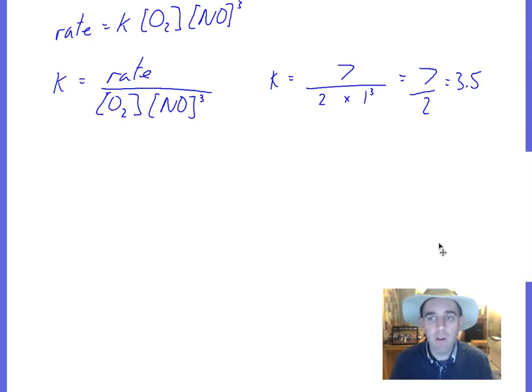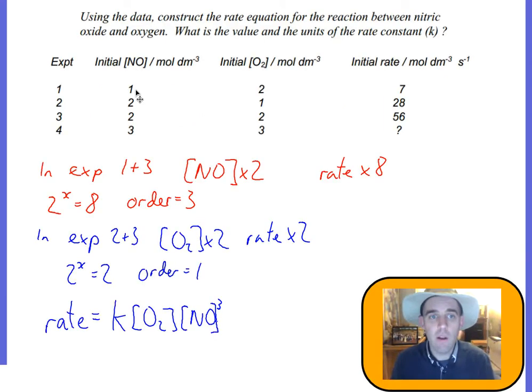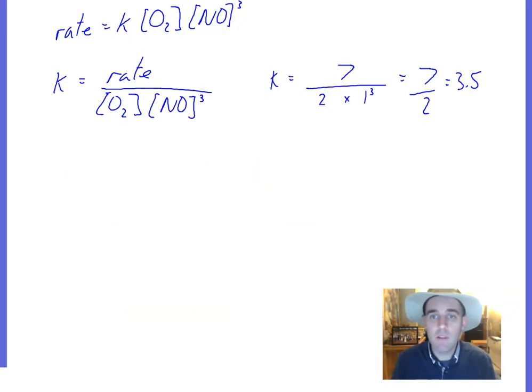If I want to find k, I rearrange the equation. You can see here, take the rate equation, rearrange it to find k. I've divided by O2 and divided by NO to the power of 3. It gives me that. These figures here I've just taken from the first line. It doesn't matter which line you choose, as long as you keep the same line.